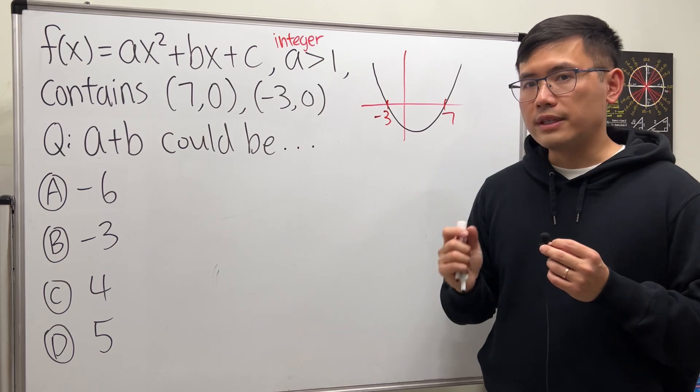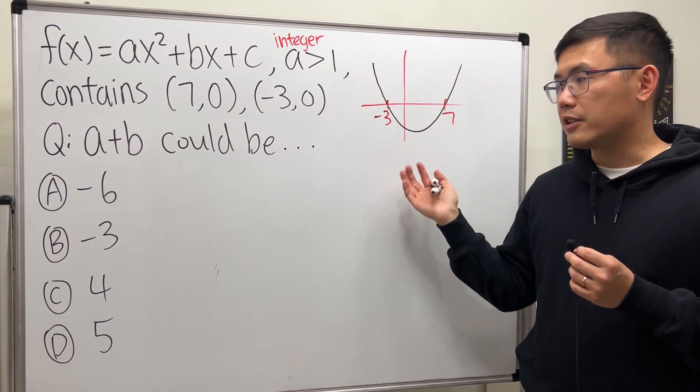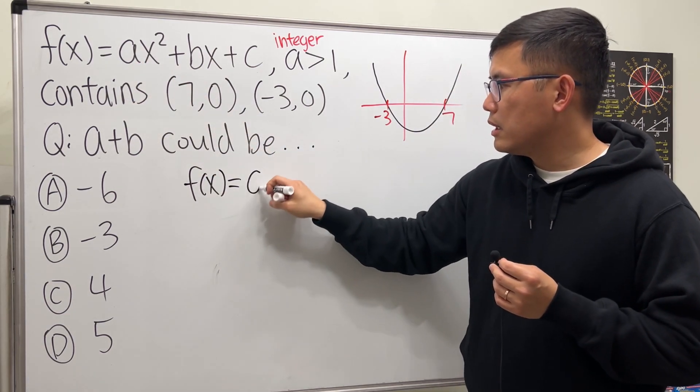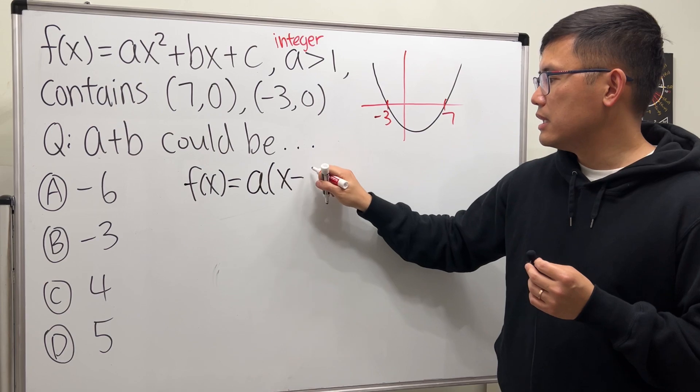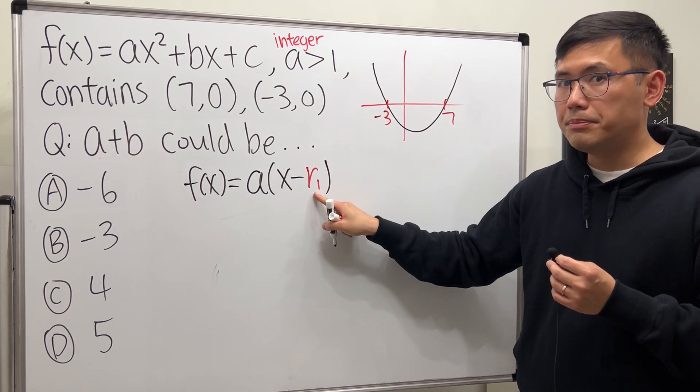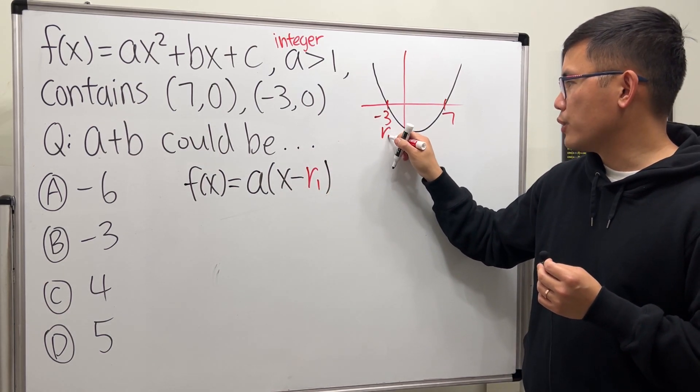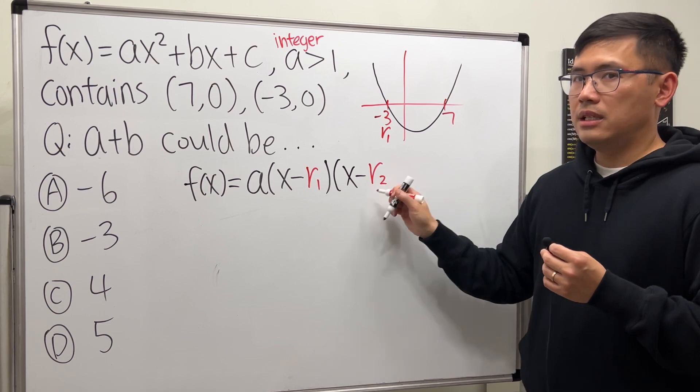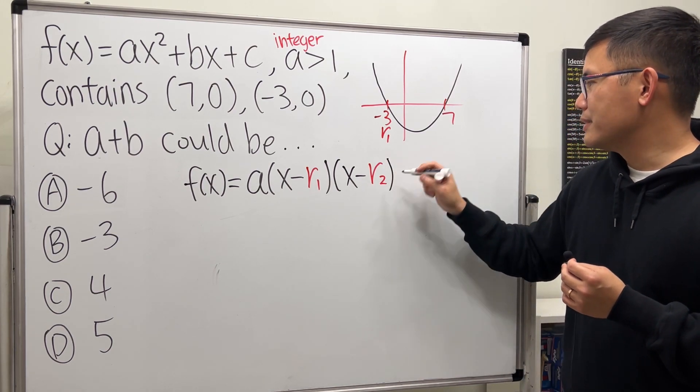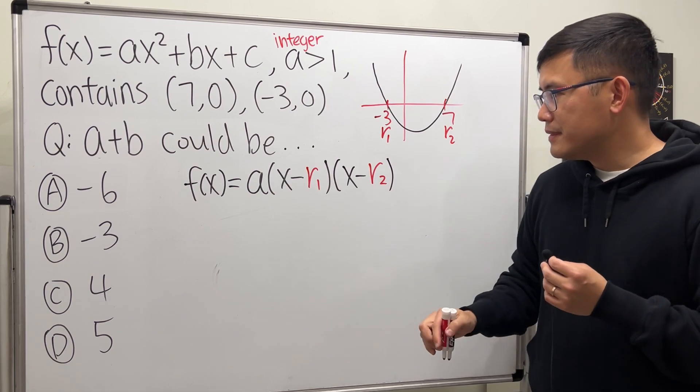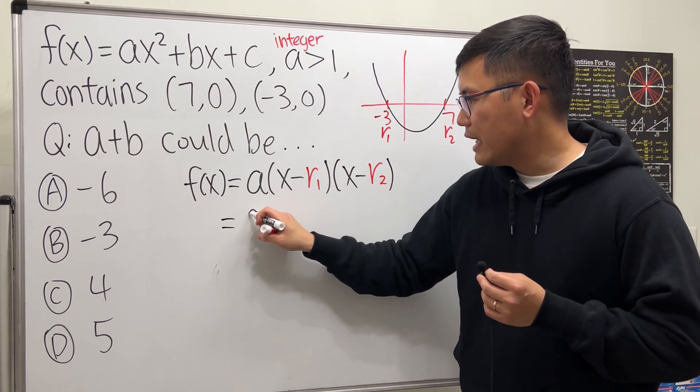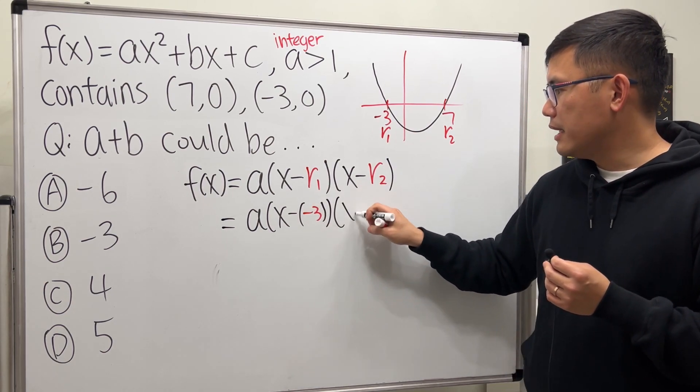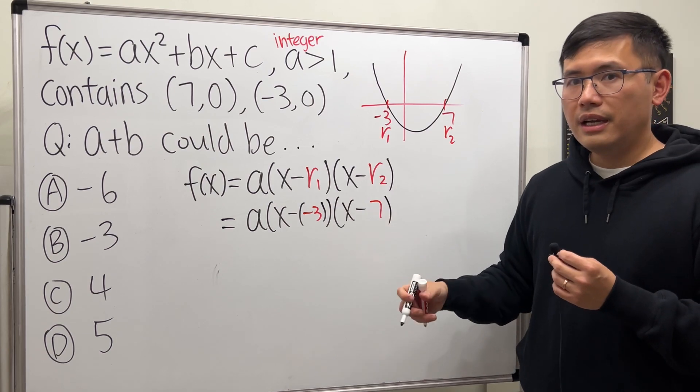The key right here is we can write the equation from the standard form into its factored form. So f(x) we can write as the same a and then times x minus the first x-intercept denoted by r₁, and then multiply by x minus the second x-intercept, let's call that r₂. Now let's just set this up: we have a times (x-r₁) is (x-(-3)) times (x-r₂) is (x-7).